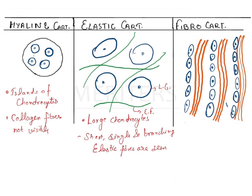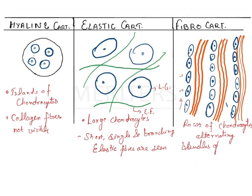The third type is fibrocartilage. In this, you will have rows of chondrocytes alternating with bundles of collagen fibers. There will be rows of chondrocytes, then collagen fibrils, then again chondrocytes, then again collagen fibers — forming an alternating pattern. By seeing these patterns you can identify the different kinds of cartilages.